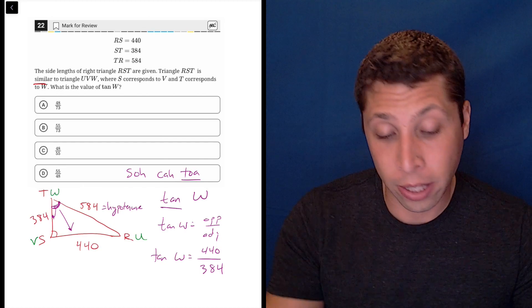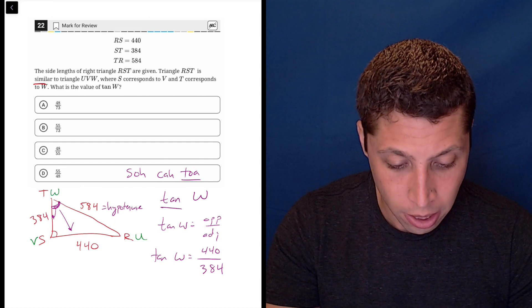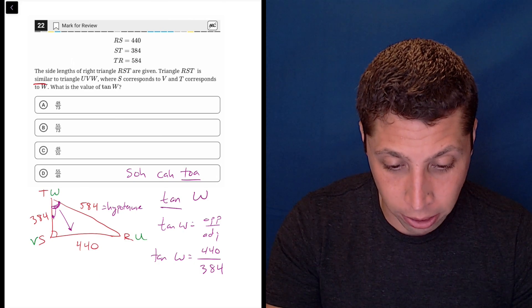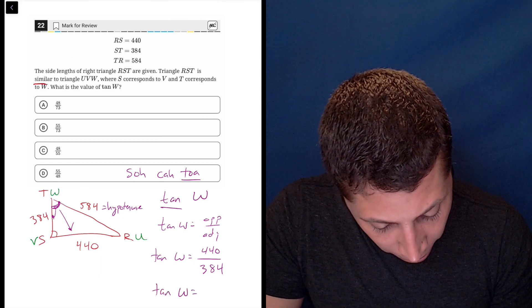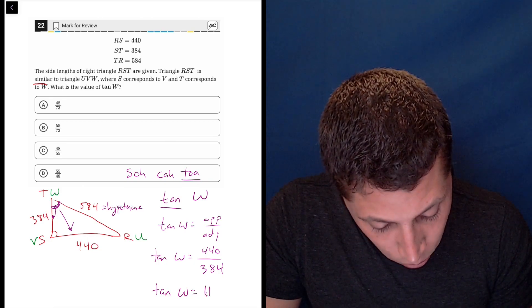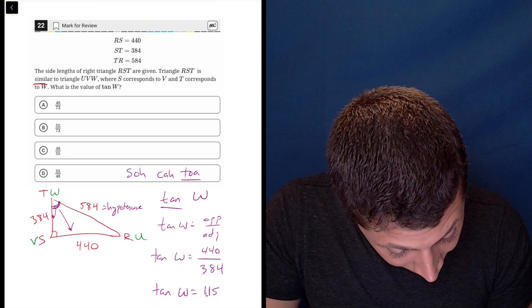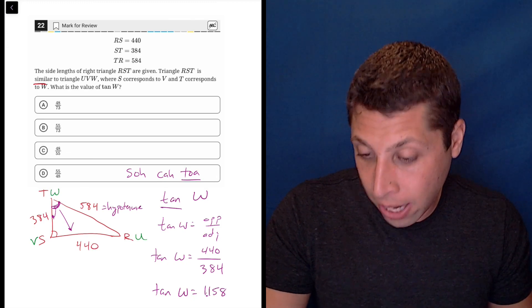We don't need to bother reducing the fraction. The calculator is going to do that for us. Let's just do 440 divided by 384 in our calculator. It's a messy number, but again, that's okay. The calculator can deal with it. So it's 11, we're sorry, 1.15, let's just do 8 around there, 1.158.